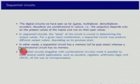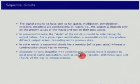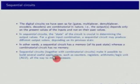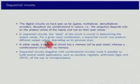Why do we bother with sequential circuits? Because they are just about everywhere. Sequential circuits together with combinatorial circuits make it possible to build several useful applications such as counters, registers, arithmetic logic units, all the way to microprocessors. If you look at a microprocessor, the clock is a predominant part of it because there are lots of sequential circuits inside, including the program counter.